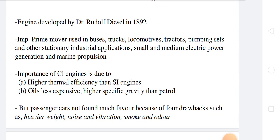CI engines give us higher thermal efficiency than SI engines. Also, diesel fuel is less expensive and we get higher specific gravity than petrol engines. However, passenger cars have not found much favor with CI engines because of four drawbacks: heavier weight, noise and vibration, smoke, and odor.